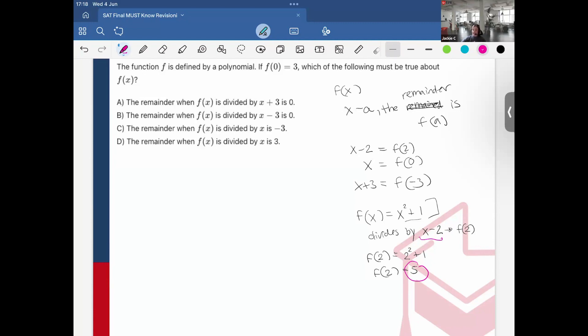So back here, I have f(0) is equal to 3. So to translate each of the answer choices,